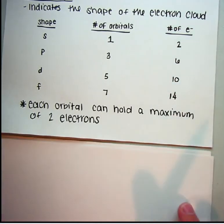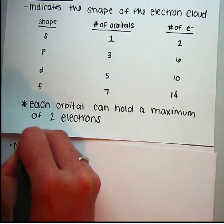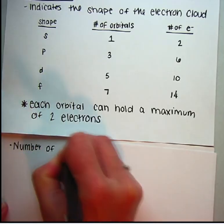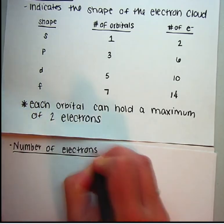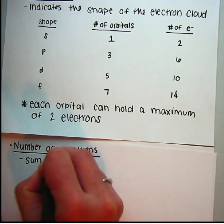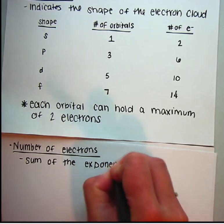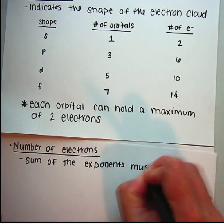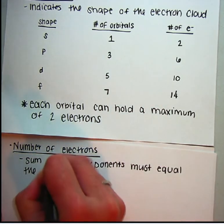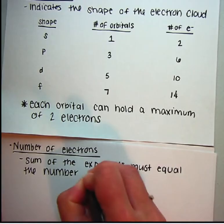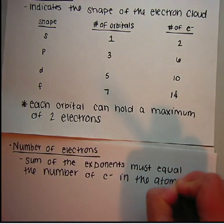Last up for today: that purple superscript — that exponent — represents the number of electrons. The sum of the exponents must equal the number of electrons in the atom.